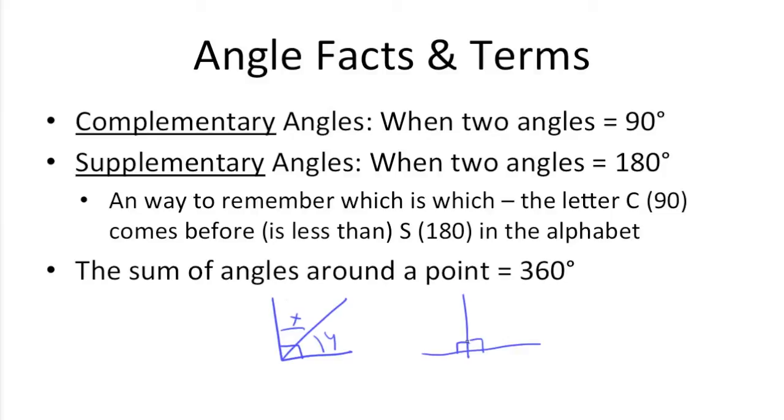If we have a 90 degree angle here, and then these two angles here X and Y, these three angles would be supplementary angles, adding up to 180. A way to remember this would be C comes before S, so 90 comes before 180.